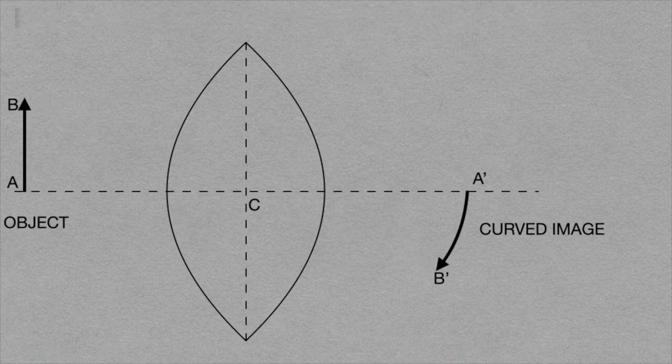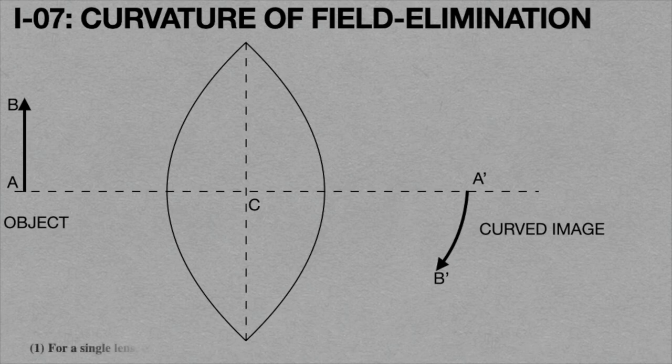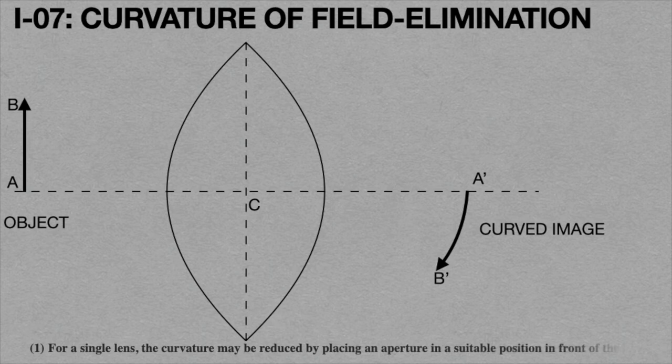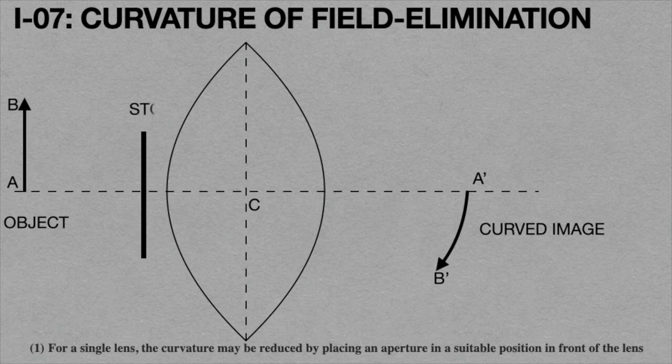Now we will discuss methods for minimizing curvature of field. First method: For a single lens, the curvature may be reduced by placing an aperture in a suitable position in front of the lens. If we use slits or stops in front of the lens, then the curvature becomes less.